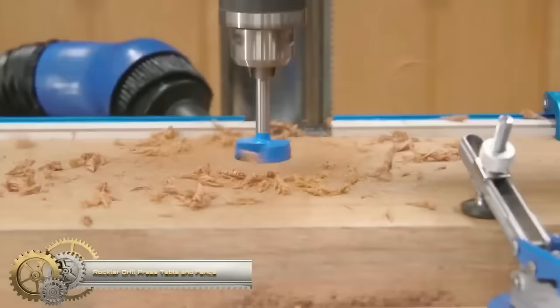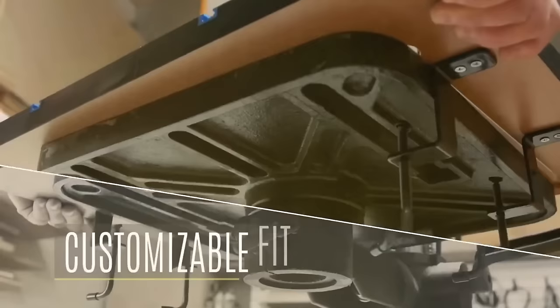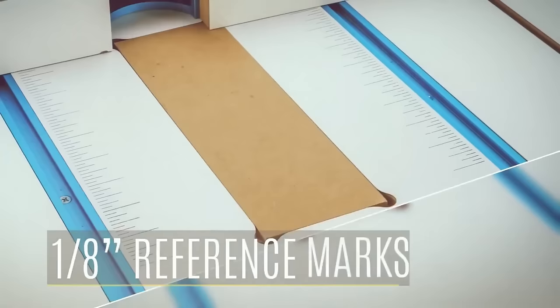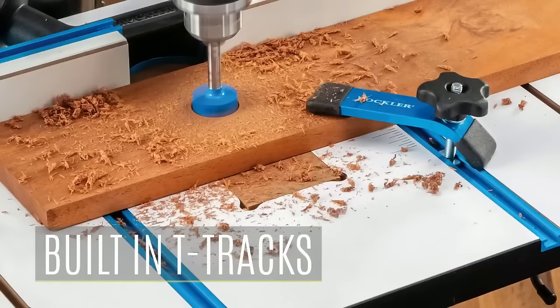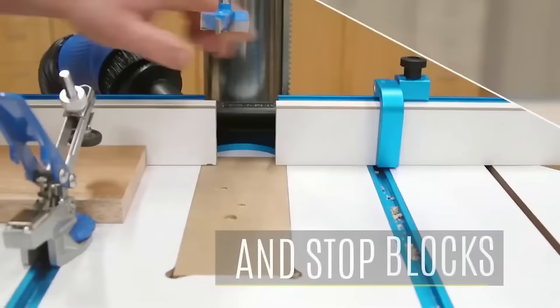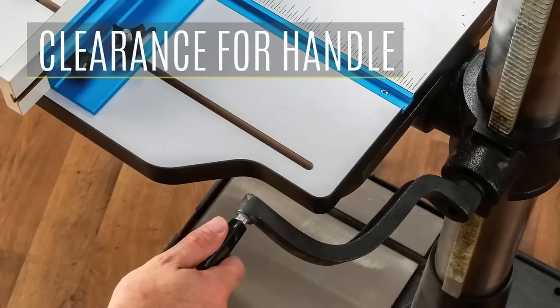The Rockler Drill Press Table and Fence are essential enhancements for drill presses, offering improved precision and functionality. With an 18 inches by 24 inches MDF tabletop covered in durable high-pressure laminate, it provides stability and ease of maintenance, featuring adaptable T-tracks for various accessories. The aluminum fence, complete with adjustable MDF faces, ensures accuracy with a variety of drill bits, even accommodating larger ones. A flip-down stop enhances accuracy. These upgrades minimize vibrations, enhance workpiece stability, and are compatible with various drill presses and accessories. The Rockler Drill Press Table and Fence are versatile tools that elevate drilling accuracy and efficiency, making them valuable additions to any workshop.